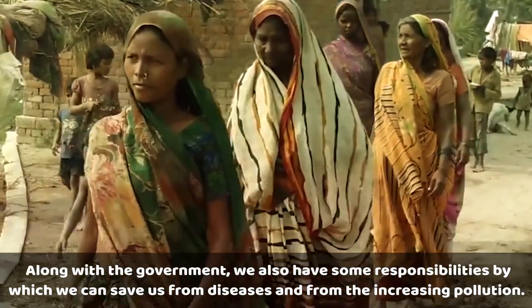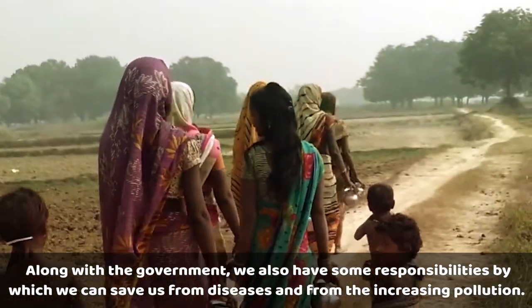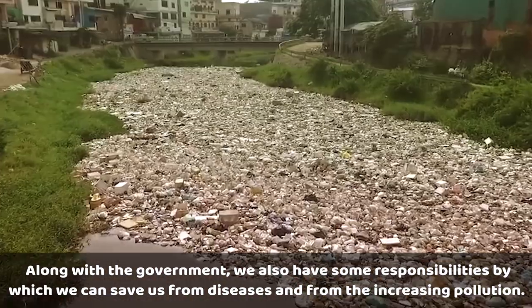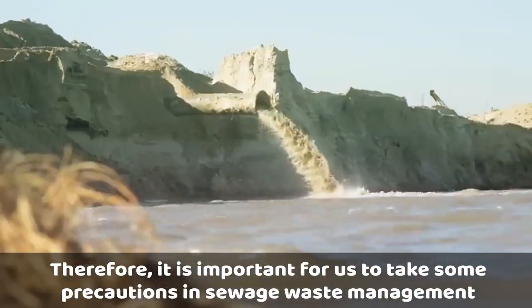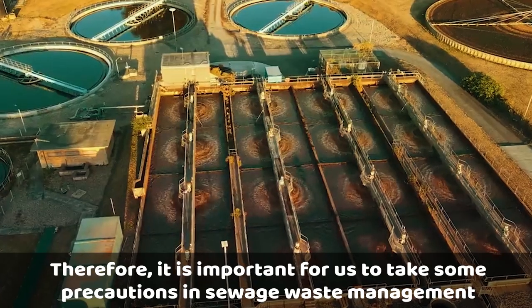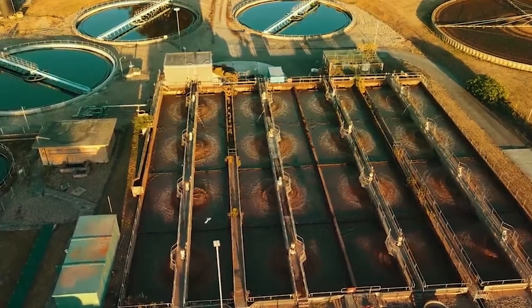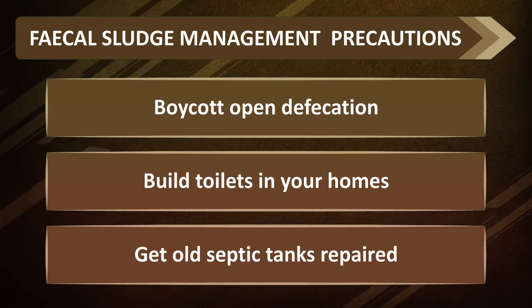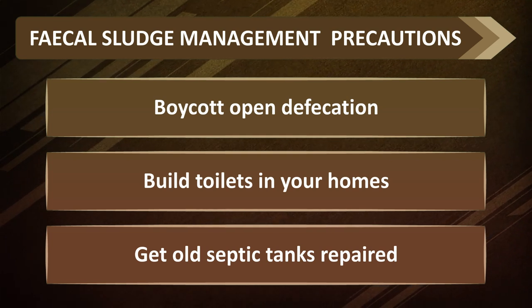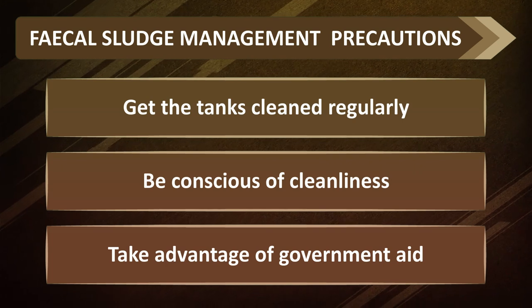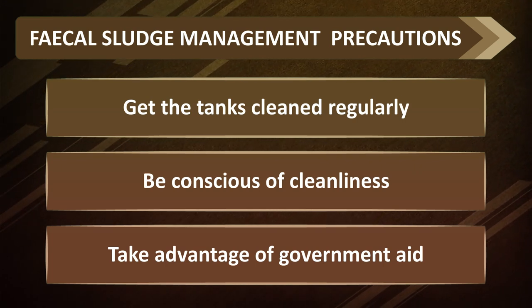Along with the government, we also have some responsibilities by which we can save ourselves from diseases and from increasing pollution. It is important for us to take some precautions in sewage waste management. Precautions regarding fecal sludge management include: boycott open defecation, build toilets in your homes, get old septic tanks repaired, get the tanks cleaned regularly, be aware of cleanliness, and take advantage of government health schemes.